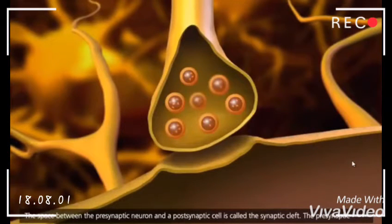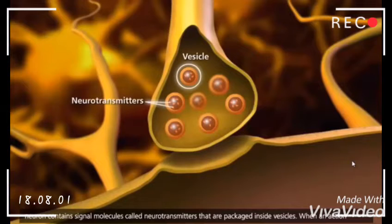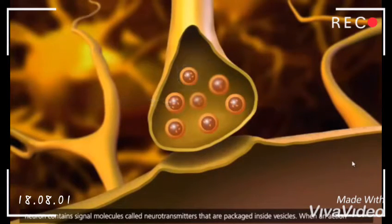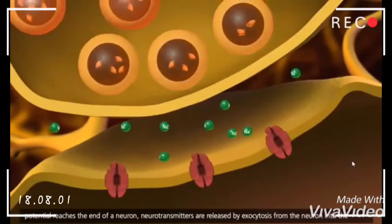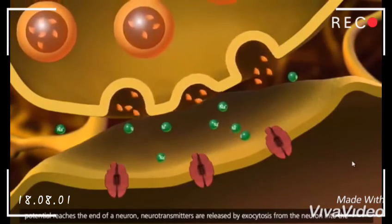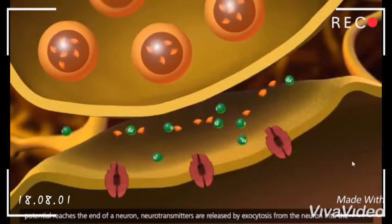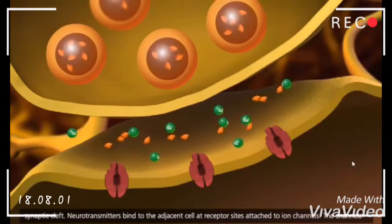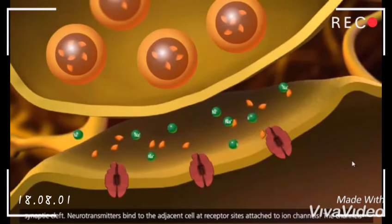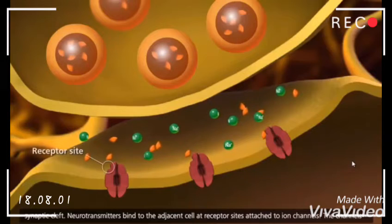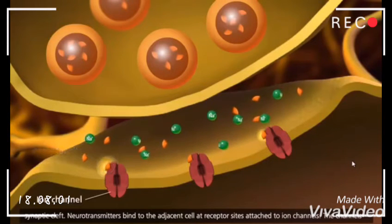The space between the presynaptic neuron and a postsynaptic cell is called the synaptic cleft. The presynaptic neuron contains signal molecules called neurotransmitters that are packaged inside vesicles. When an action potential reaches the end of a neuron, neurotransmitters are released by exocytosis from the neuron into the synaptic cleft.